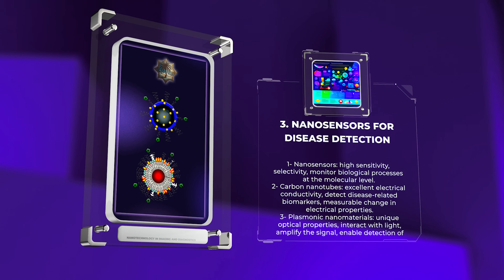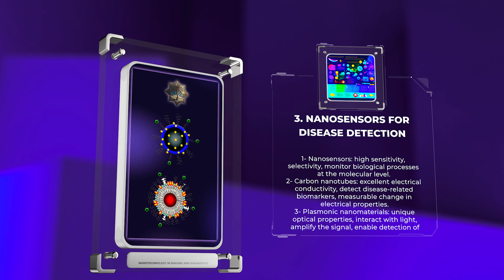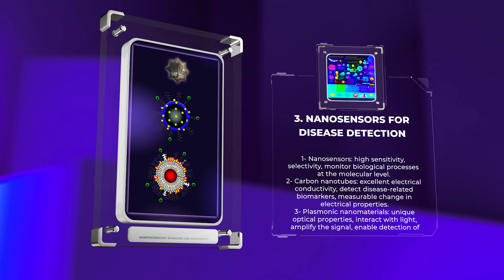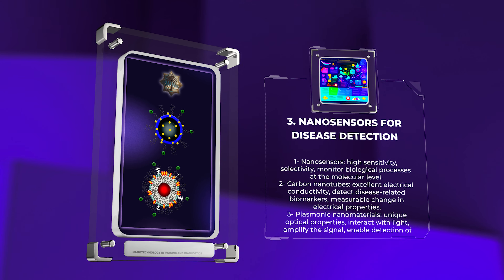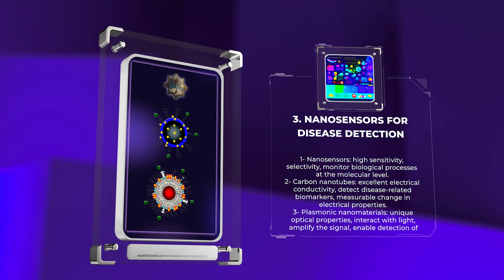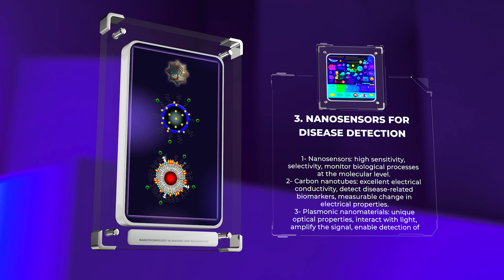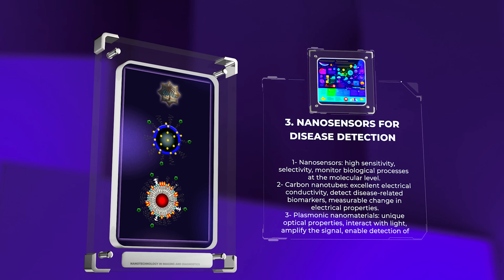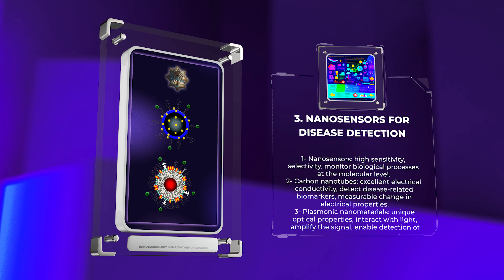Nanosensors have emerged as powerful tools for disease detection due to their high sensitivity, selectivity, and ability to monitor biological processes at the molecular level. By integrating nanotechnology with sensor technology, nanosensors can detect specific biomarkers or analytes associated with various diseases. One fascinating example is the use of carbon nanotubes as biosensors. Carbon nanotubes possess excellent electrical conductivity, and when functionalized with specific biomolecules, they can detect disease-related biomarkers such as proteins or nucleic acids. The interaction between the target biomarker and the nanotube surface results in a measurable change in electrical properties, providing a sensitive detection mechanism.